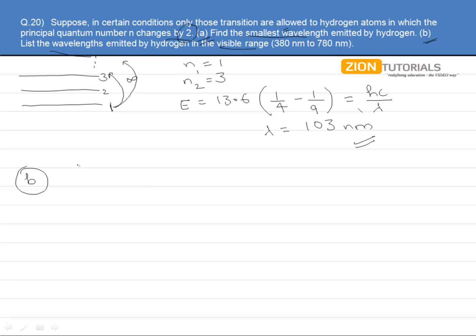So if we look at the transition from 2 to 4, we have the energy to be 13.6 into 1 by 4 minus 1 by 16, and equating that with hc by lambda.